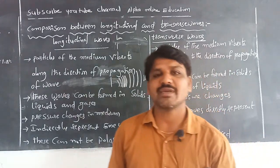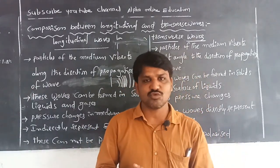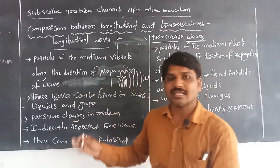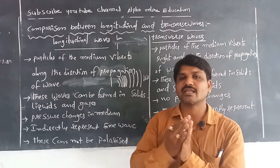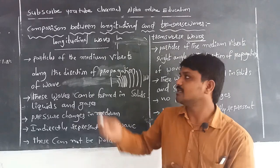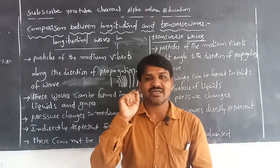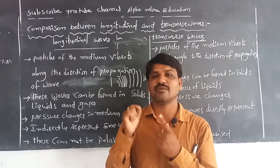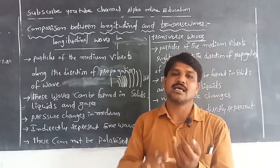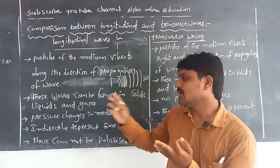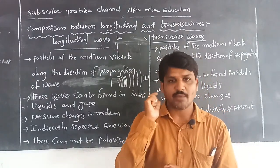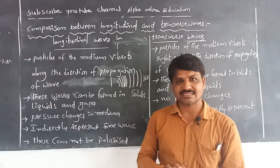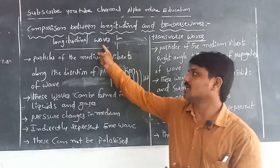Because of this, longitudinal waves cannot be polarized. Polarization means when waves are moving in several directions, they can be confined to a specified direction. Longitudinal waves cannot be polarized because they are moving parallel to the direction of wave propagation. To summarize: in longitudinal waves, vibrating particles move parallel to the direction of the wave; rarefactions and compressions are formed; waves can exist in solids, liquids, and gases; pressure changes in the medium; and they indirectly represent the sine wave but cannot be polarized.